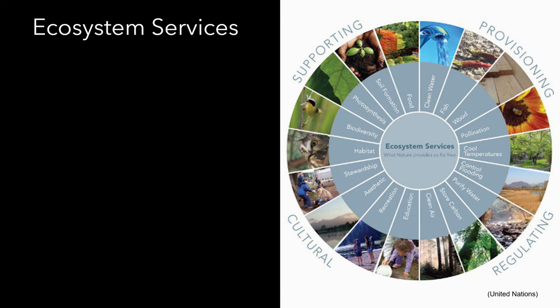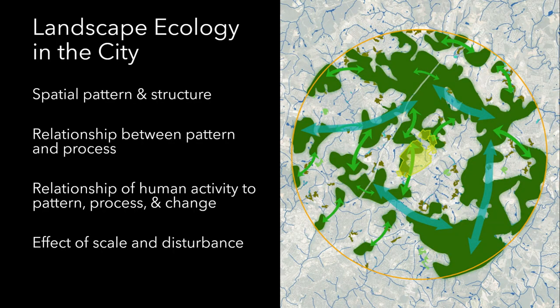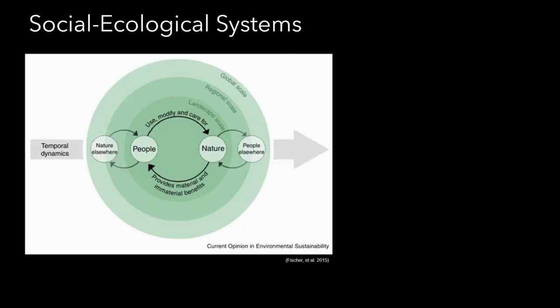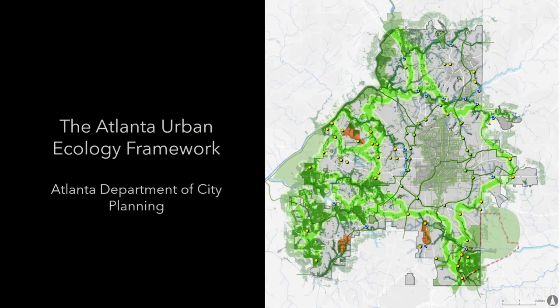This also draws from the idea of ecosystem services — what are the benefits that nature provides us for free if we take care of her properly? Landscape ecology research is also drawing new insights from urban areas, as well as social-ecological systems: human social systems and natural biophysical systems, how they interact over time and at different scales. By way of exploring these themes, I'll be presenting the Atlanta Urban Ecology Framework project that we worked on with the Atlanta Department of City Planning.